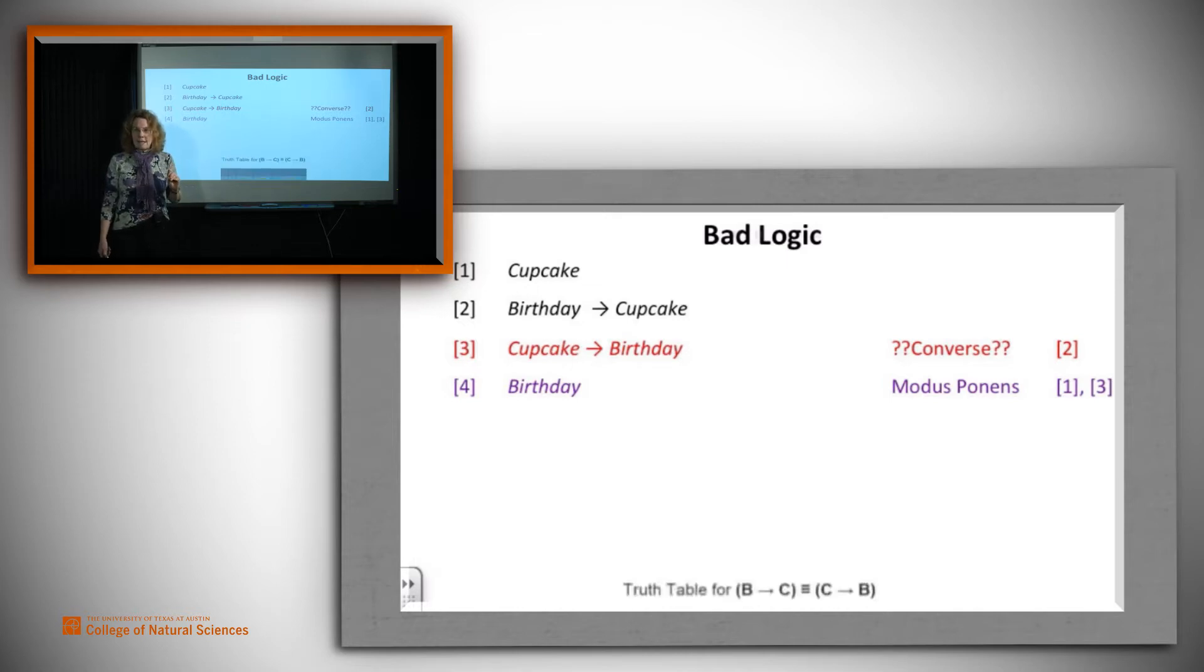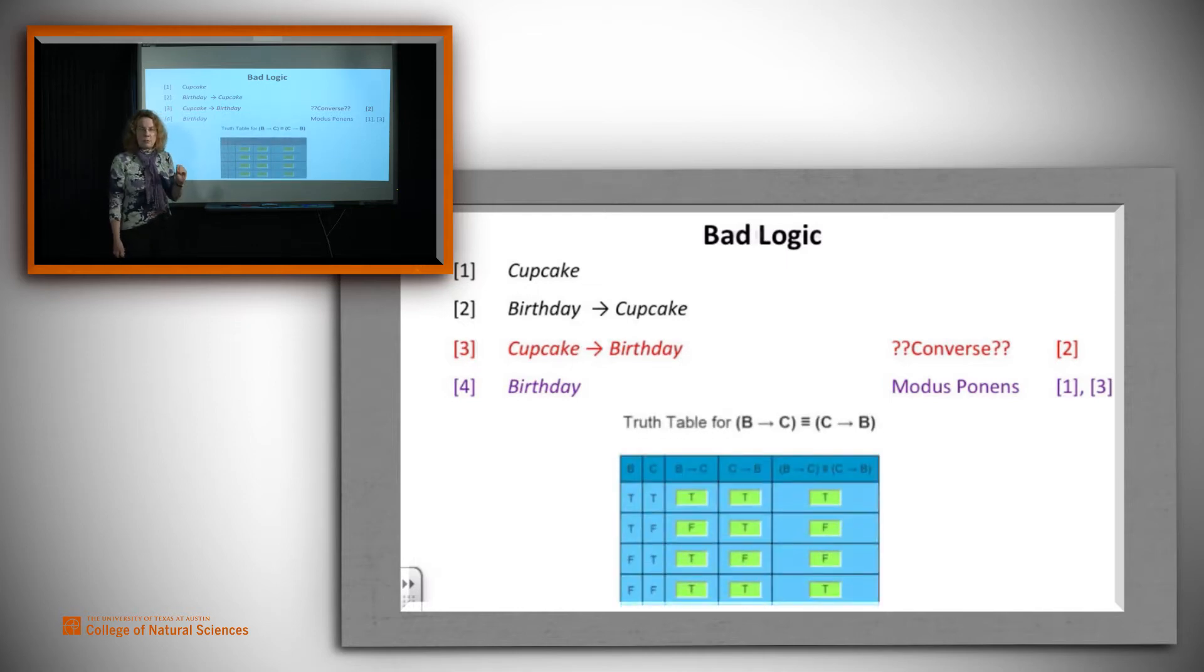And let's see why we know that that's the case. Here's the truth table for converse. It says, if it were to be a sound rule, if it were to be a tautology, then we'd have to have the case that B implies C is logically equivalent to C implies B. And if that were true, then this last column would contain all t's. It doesn't. It contains two t's and two f's. And in fact, the two f's happen exactly in the case where B and C have different values, where it might be the case that there is a cupcake and not a birthday.